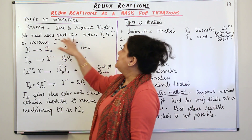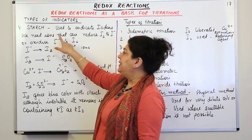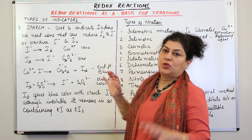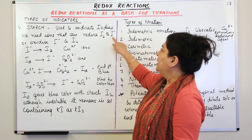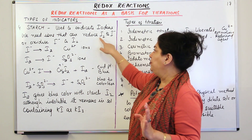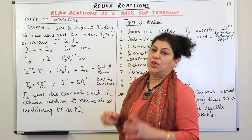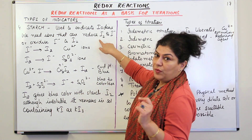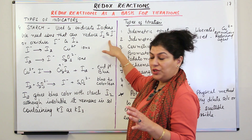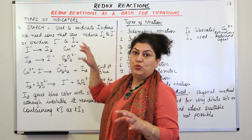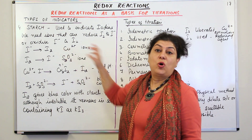We need ions that can either reduce I2 to I⁻ or oxidize I⁻ to I2. In I⁻ the oxidation state is −1, and in the elemental form I2, each iodine has an oxidation state of 0. So when I2 is converted to I⁻, it goes from 0 to −1 — that is reduction. And when I⁻ is converted to I2, the oxidation state increases from −1 to 0 — therefore it is getting oxidized.